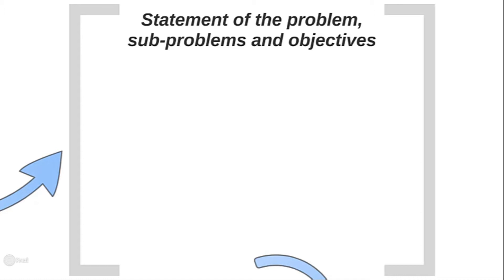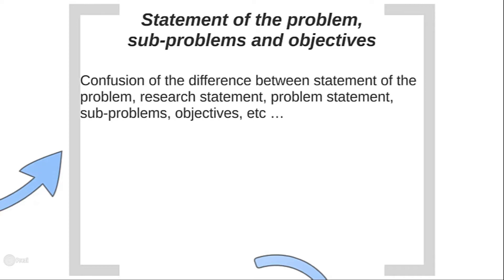Once you have contextualized your research problem for the reader, you then have to go ahead and articulate the statement of the problem, sub-problems, and objectives. This is where confusion usually comes in, because students mix up the difference between the statement of the problem, the research statement, the problem statement, the sub-problems, objectives, etc. So let's take a moment and really focus on this, making sure we understand all the differences.